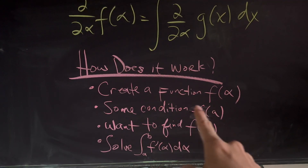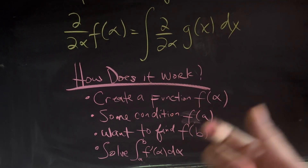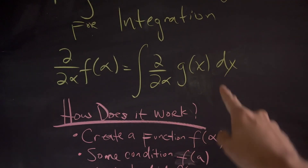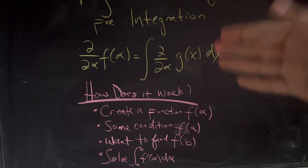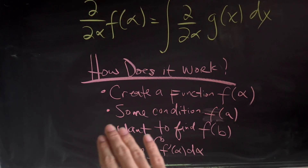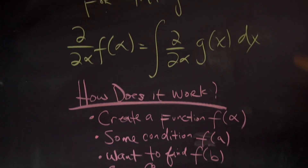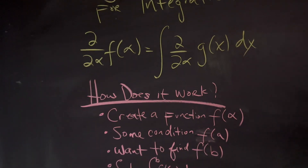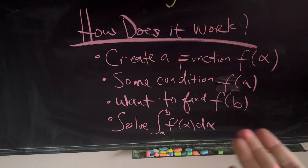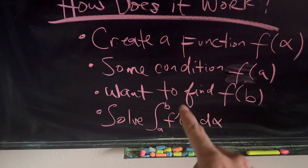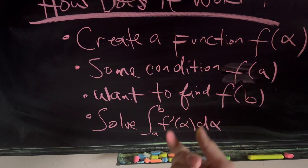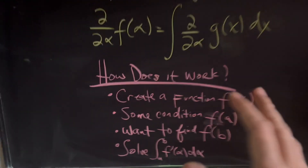The idea is that you create a function f(alpha), where alpha is going to be somewhere inside your domain for the original function g(x). Now g(x) is typically a definite integral. The idea is that you want to set some condition f(a), and you want to find f(b), where f(b) is basically the integral we're trying to find. At the end, what we're really trying to find is the definite integral from a to b of f prime of alpha — this is the partial derivative that Richard Feynman made quite famous. Let's check it out.